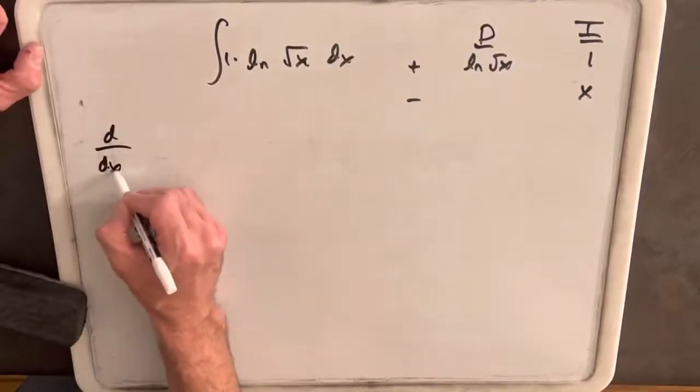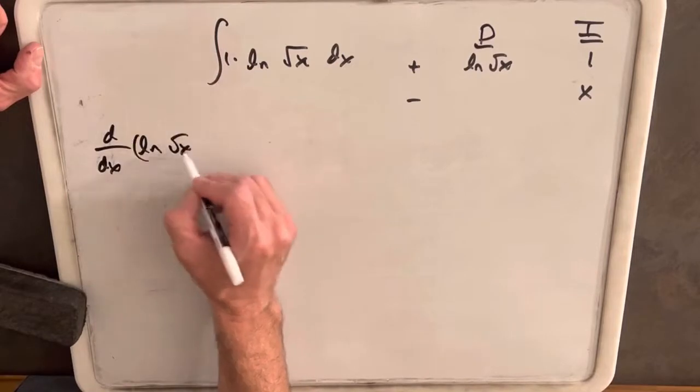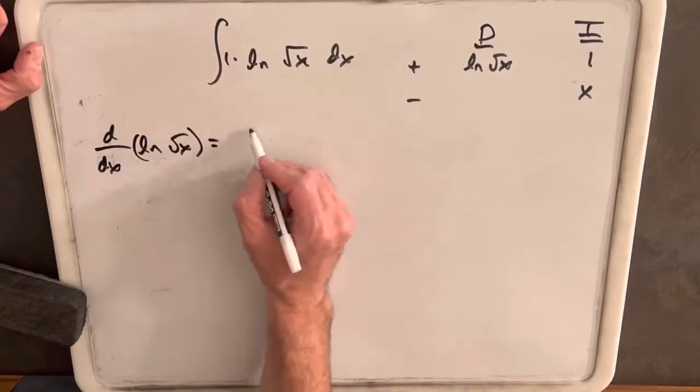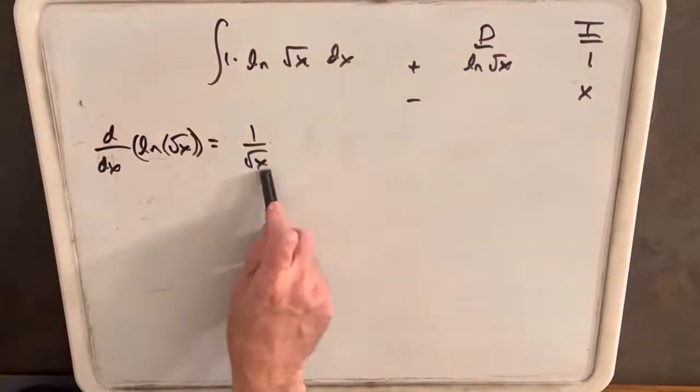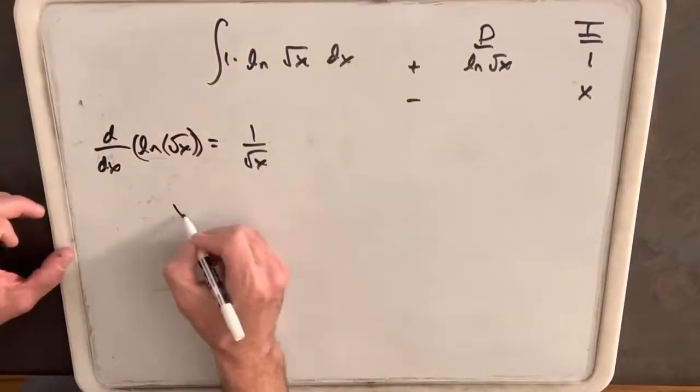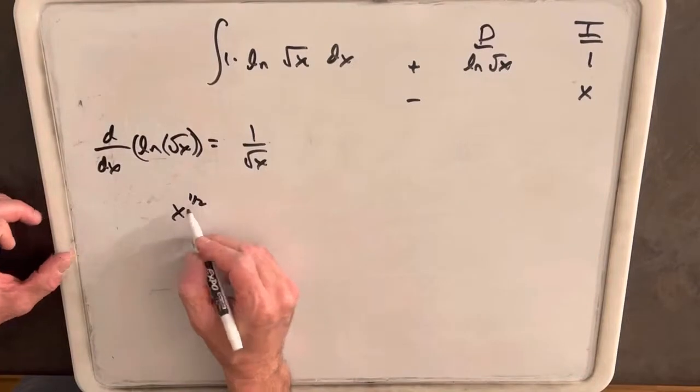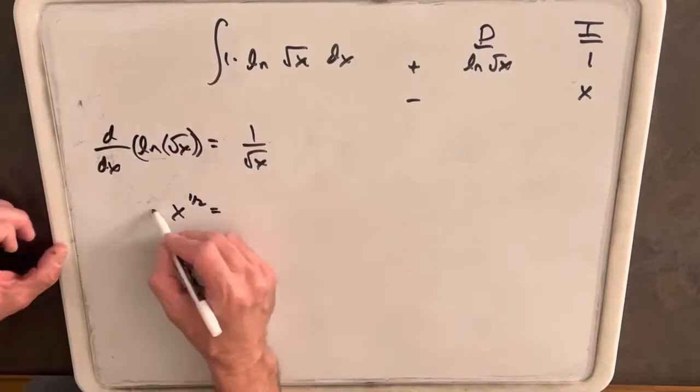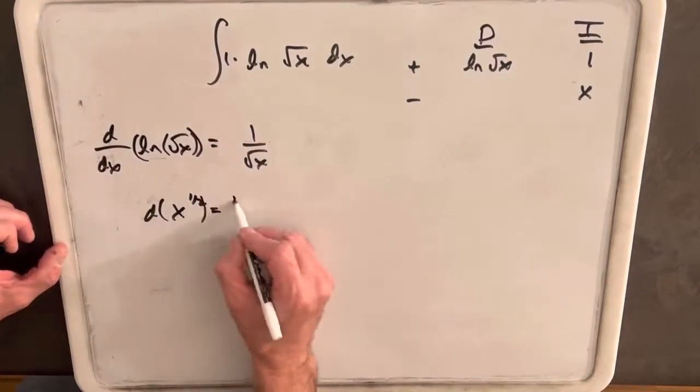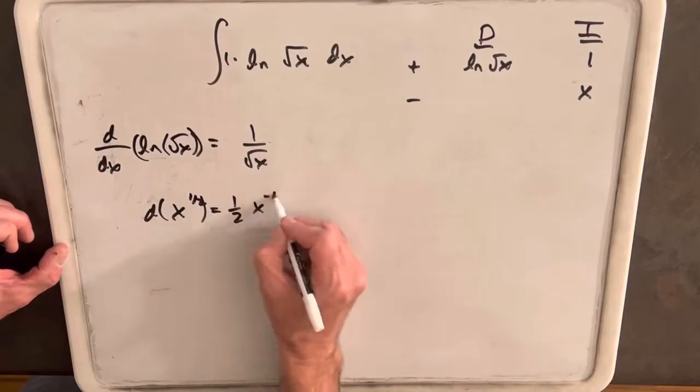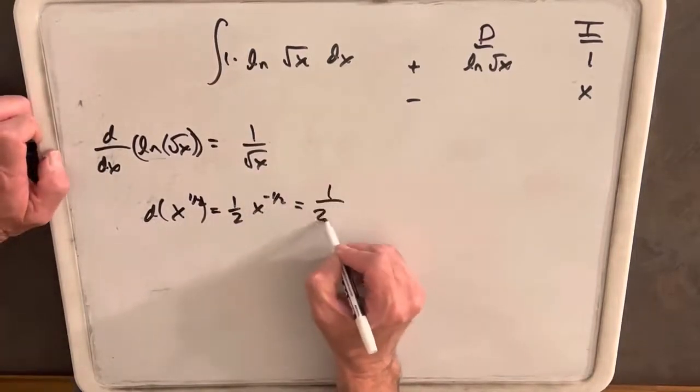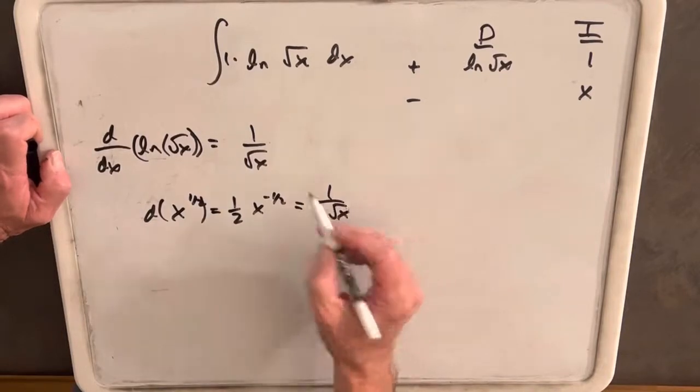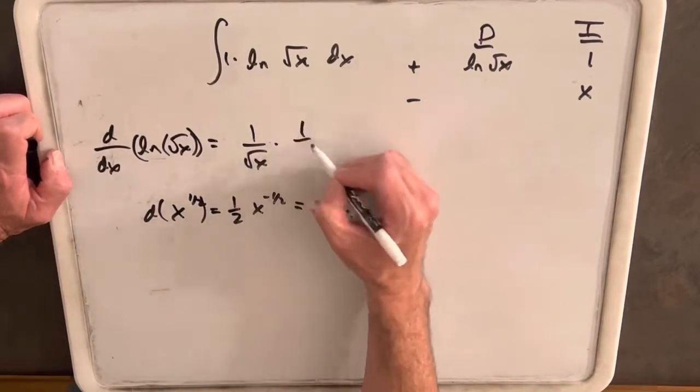So the derivative of ln square root of x is going to be 1 over square root of x. But we need to use the chain rule on square root of x. Let's just look at that as x to the 1 half, and then we'll just use the power rule. So when we differentiate this piece, we'll have a half x minus a half. But that's just going to be 1 over 2 square root of x. So we'll put in that part of the chain rule here.